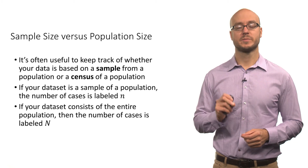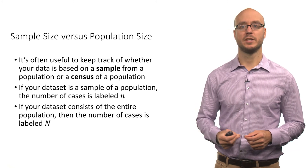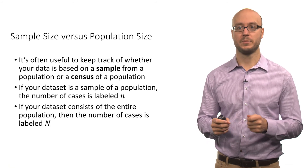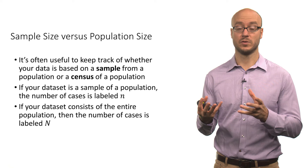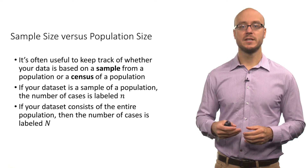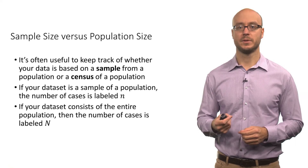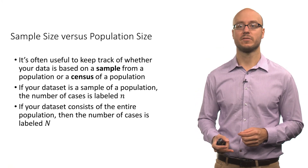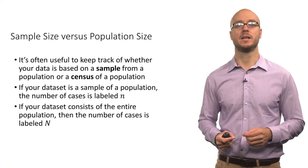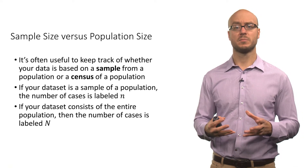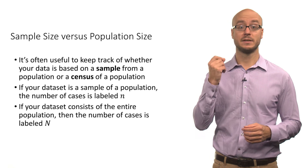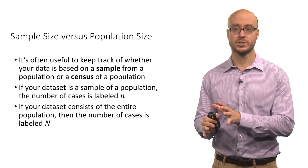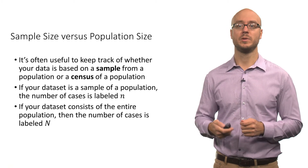It's also useful to distinguish between sample size and population size. If your dataset is a sample of a population, the number of cases — the total number of rows in your dataset — is labeled with a lowercase n. If your dataset consists of the entire population, the number of cases is labeled with a capital N, to remind ourselves whether we're dealing with a population or a sample.